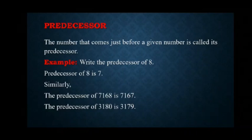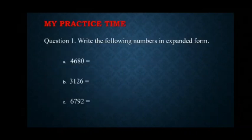Now, let us do some questions for practice. Question 1: Write the following numbers in extended form. Part A is 4680. Extended form is nothing but the sum of the place value of digits in a number. So, 4680 is equal to 4000 plus 600 plus 80 plus 0.